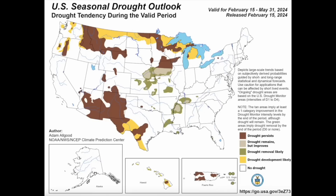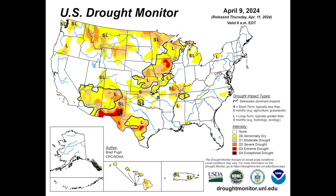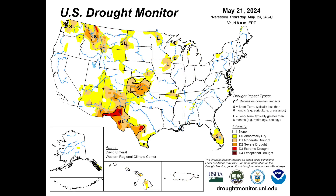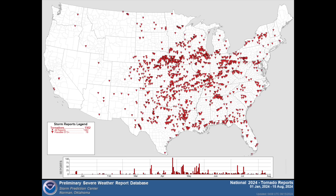Long-range outlooks showed drought persisting across the desert southwest into west Texas, but it did not seem like this would negatively impact EML strength going into the spring, and this ended up being the case, as little change in drought conditions occurred from March through June.